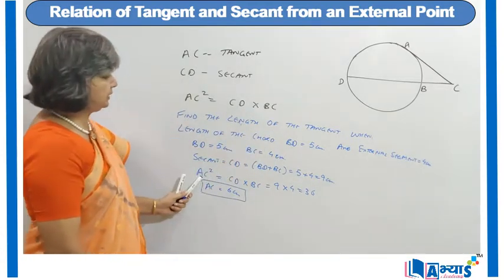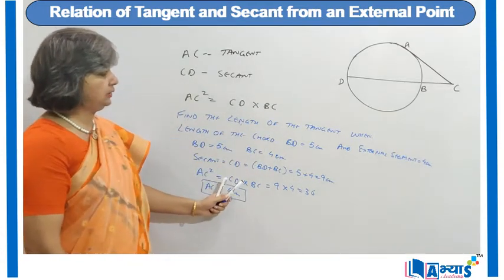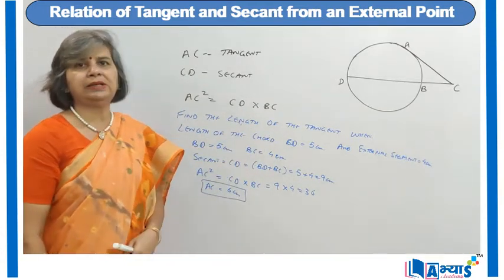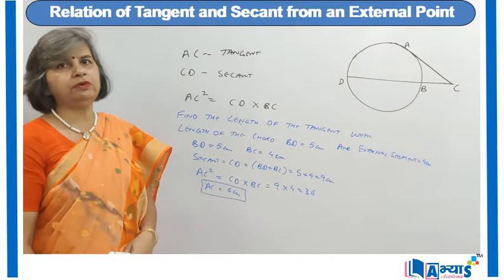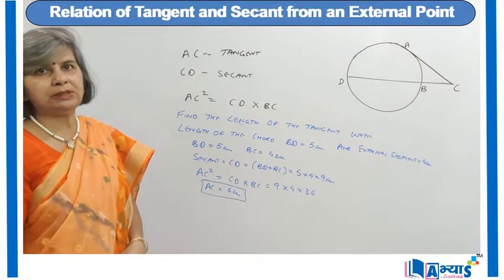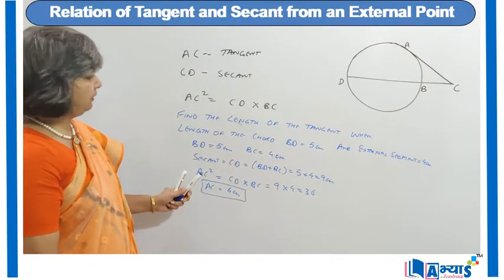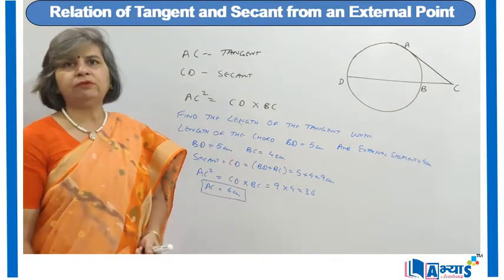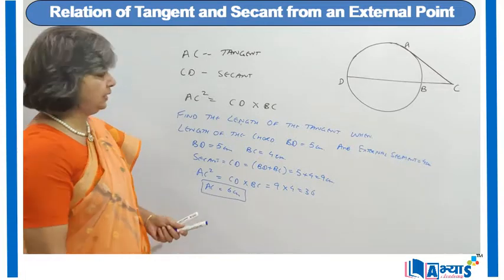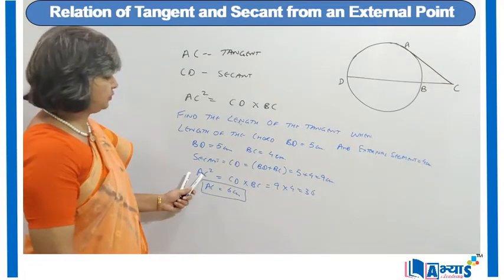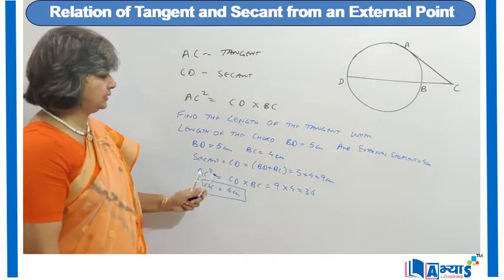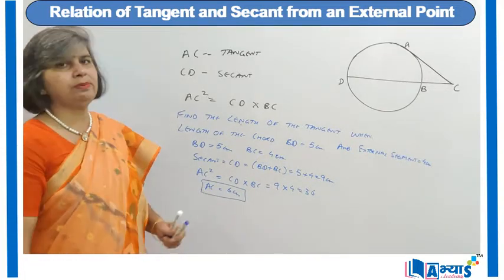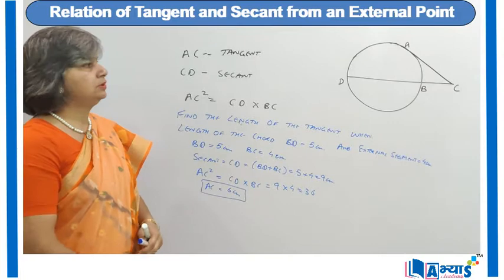According to the relation, AC square is equal to CD into BC, that is 9 into 4 which is equal to 36. We know that 36 is the square of 6, so AC square is equal to 36 and AC will be equal to 6 centimetre.